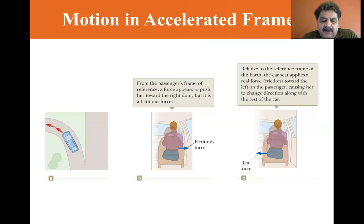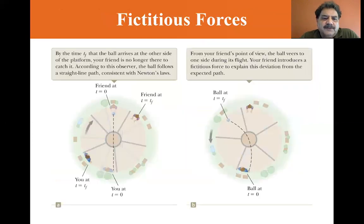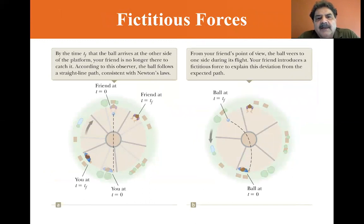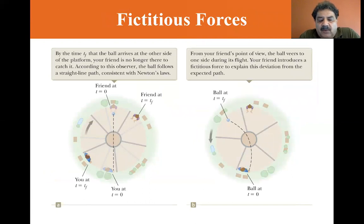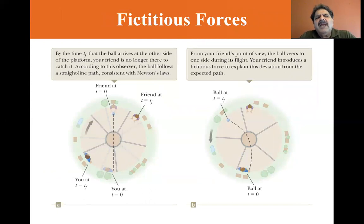Let's look at another fictitious force. If you're on a merry-go-round and you throw a ball to a neighbor, this involves a fictitious force called the Coriolis force — an apparent force caused by the changing radial position of an object in a rotating coordinate system. Look up videos of a Foucault pendulum, F-O-U-C-A-U-L-T.